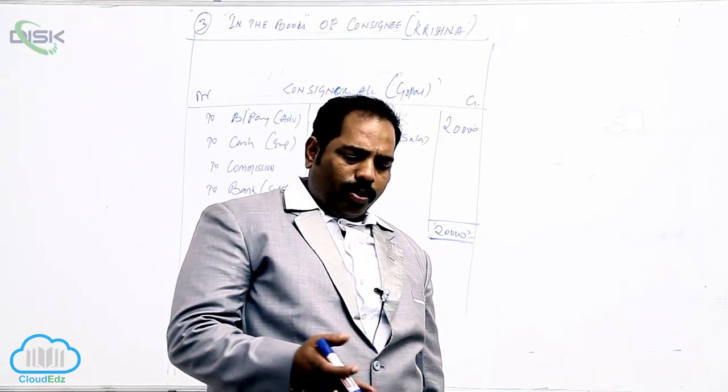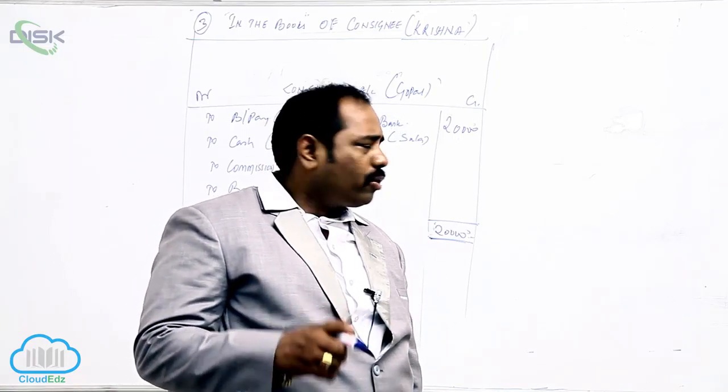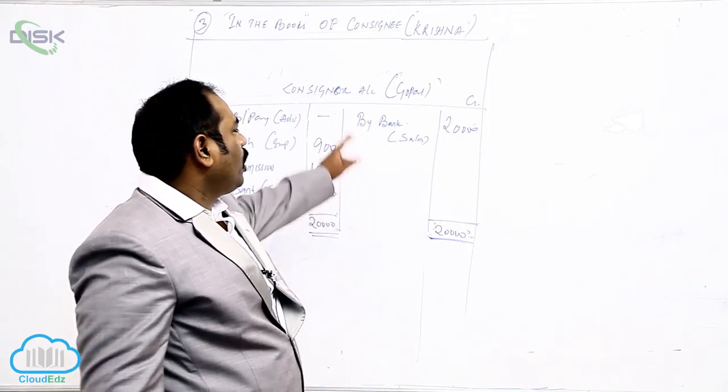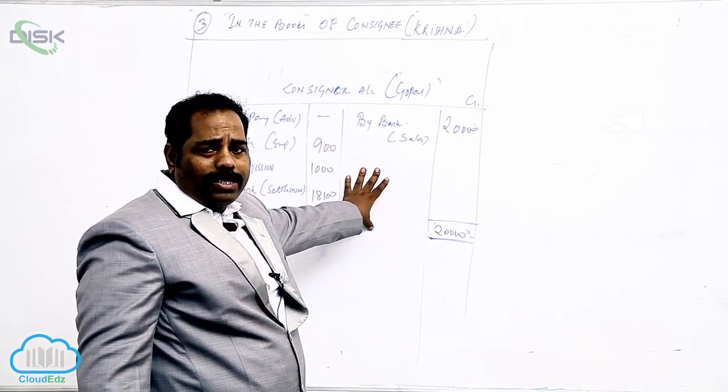And all the problems — 1, 2, 3, 4, 5, 6 — in the books of Kanzayani, all the problems with same entries will be passed.